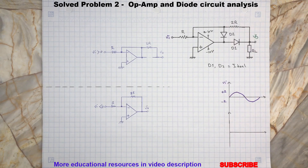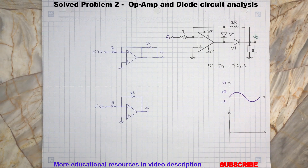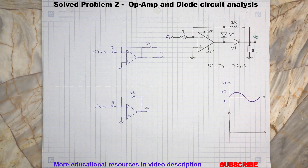Before we jump into the next circuit, please subscribe to the channel if you haven't yet. Your support will help this channel to grow and encourage me to create more content. Now back to the video — this is the second circuit that we are going to review today. The input to this op-amp circuit is a sinusoidal wave with plus minus 2 volt peak.